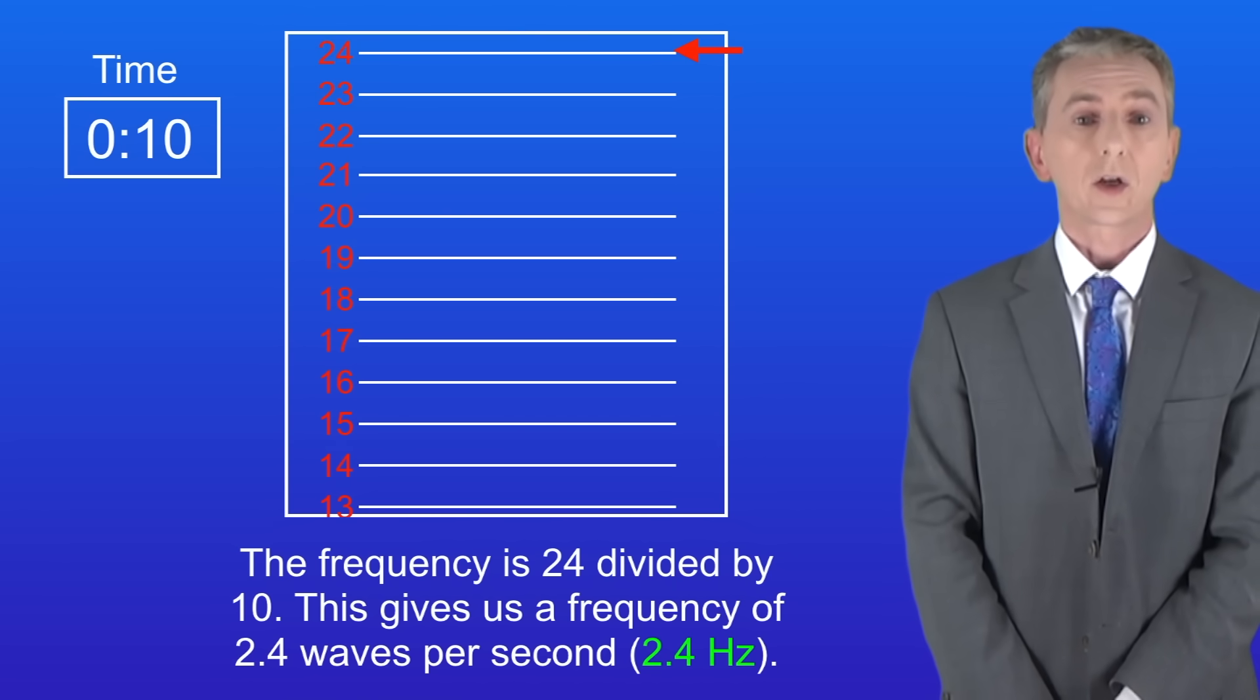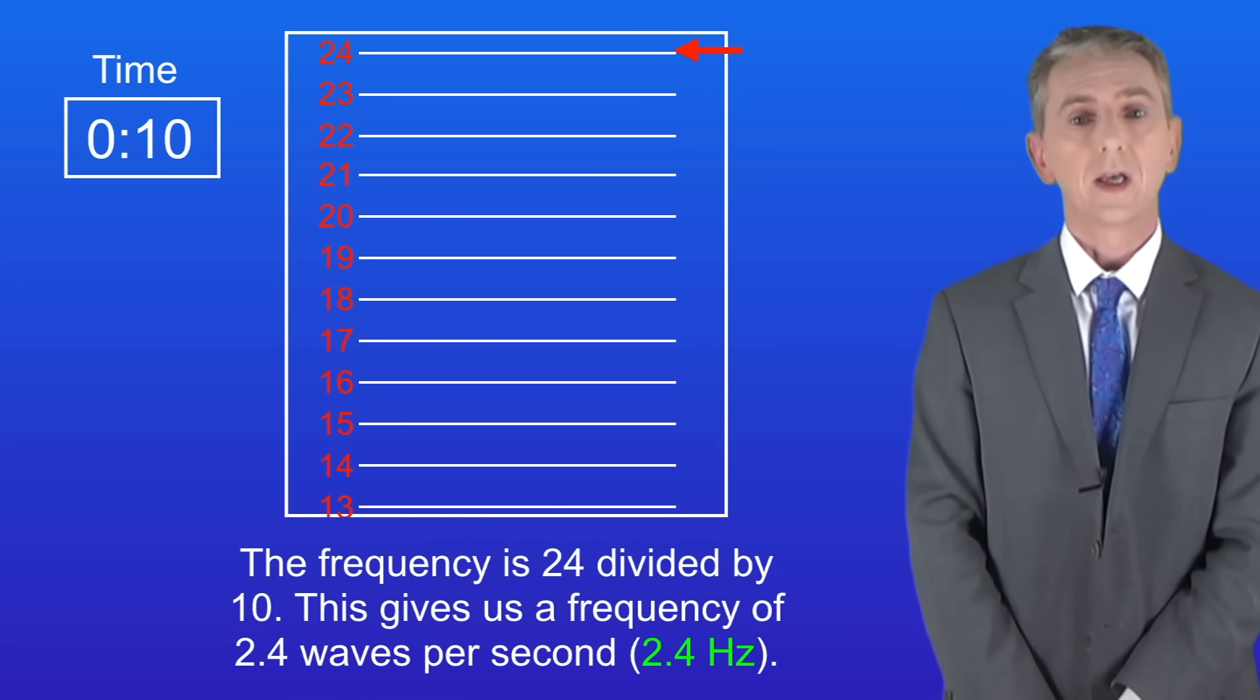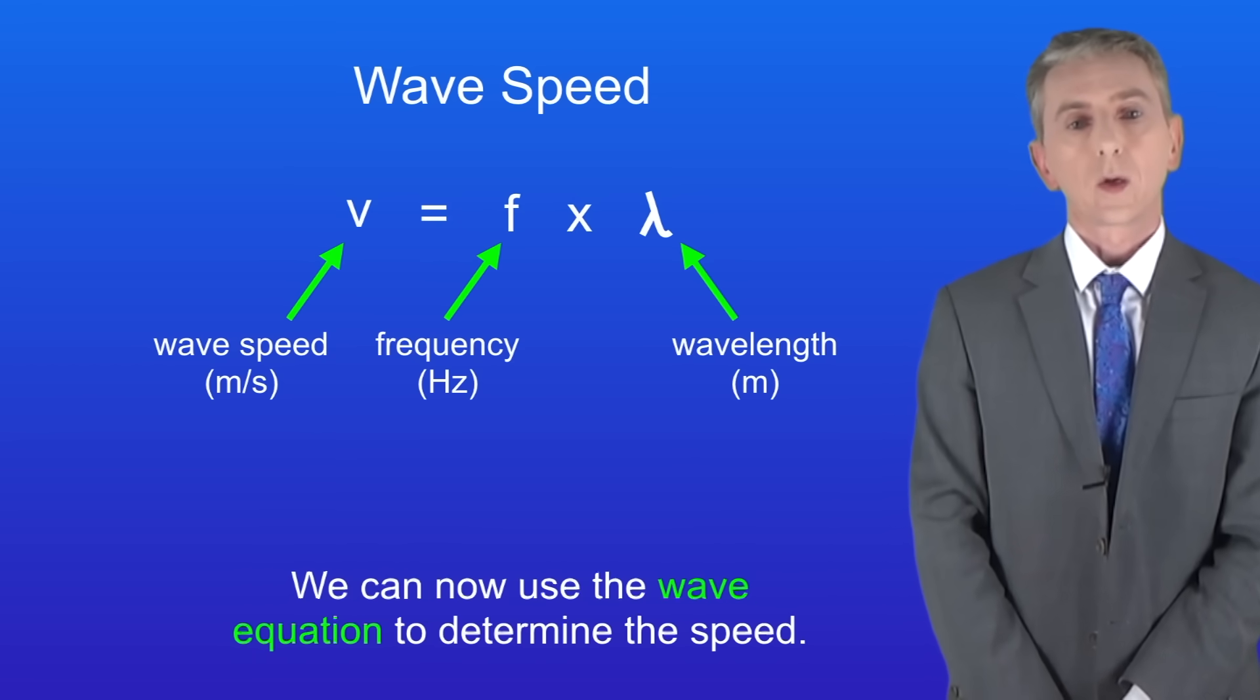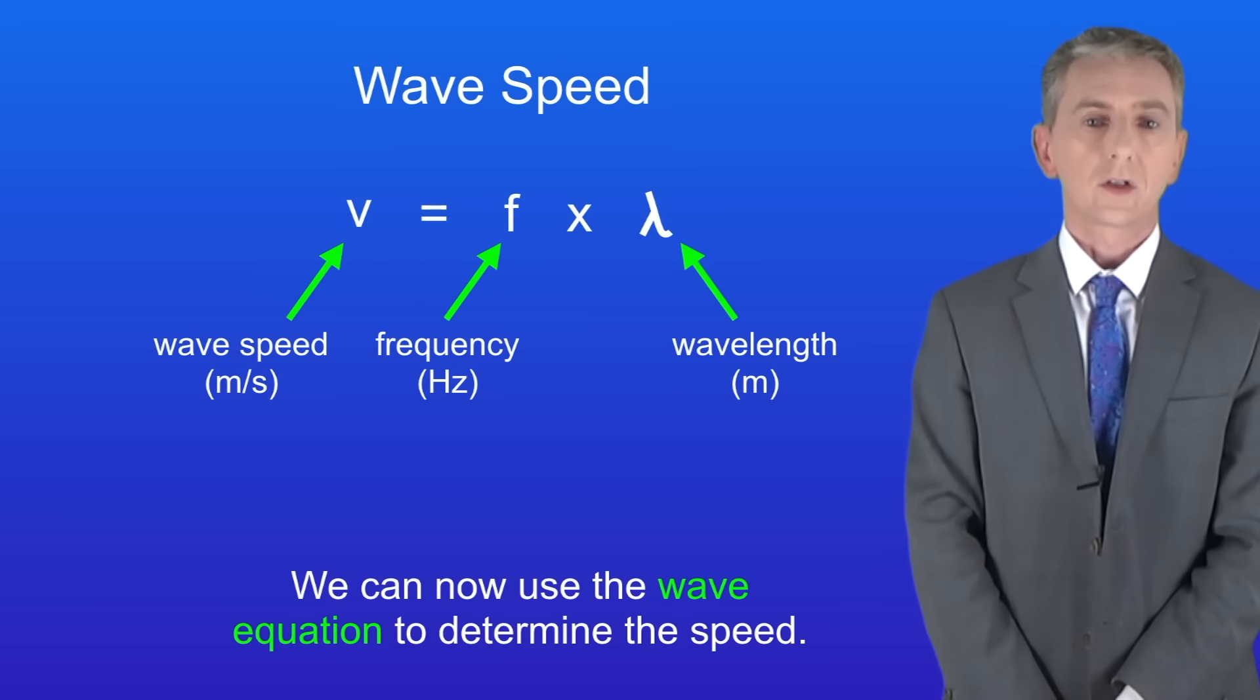We're going to finish now by looking at how to determine the speed of the waves and this is fairly straightforward. We already know the wavelength and the frequency of the waves. We can now use the wave equation to determine the speed.